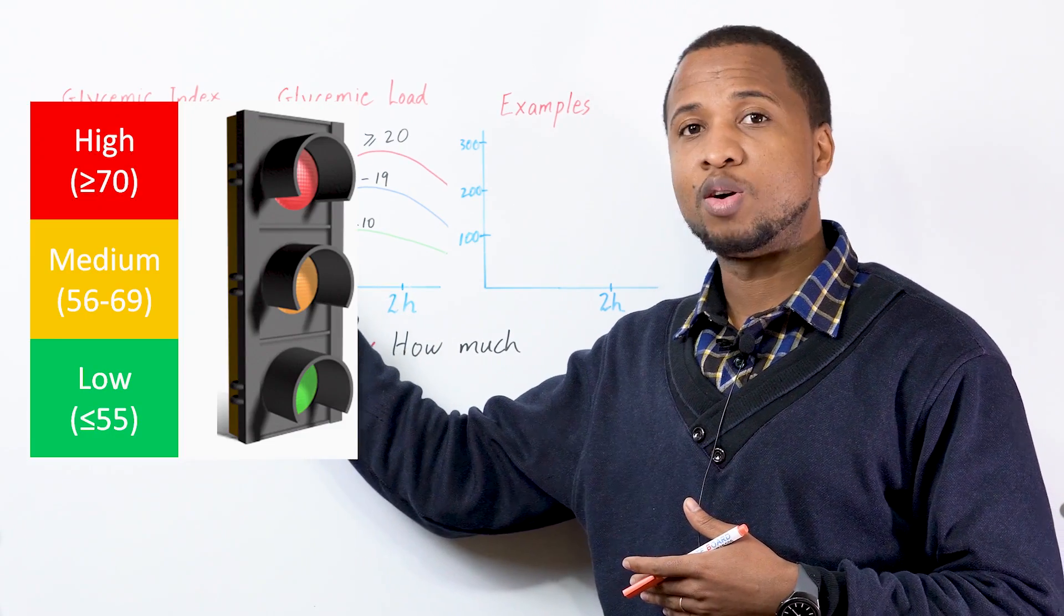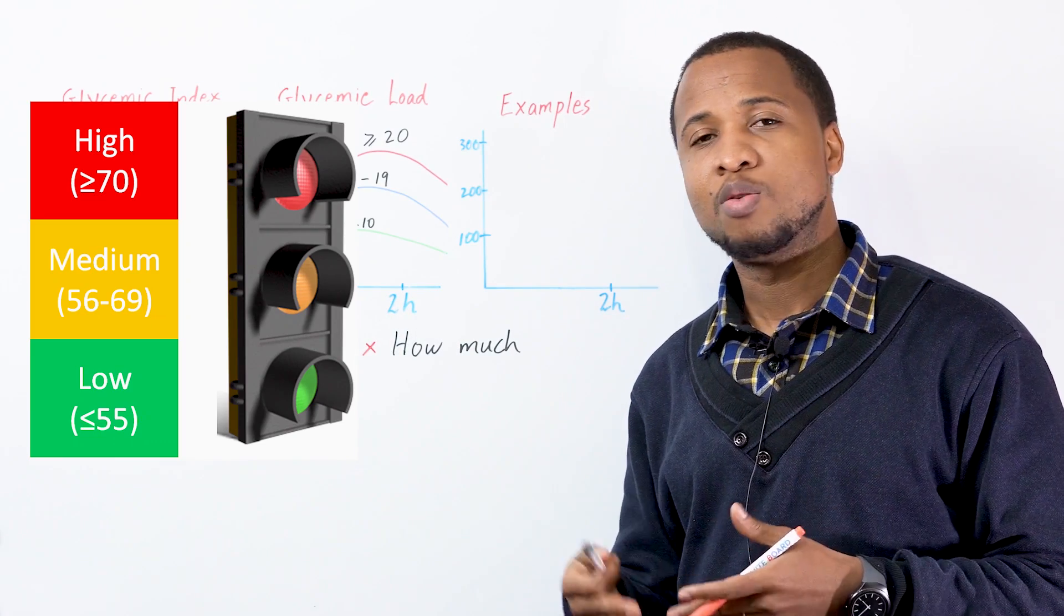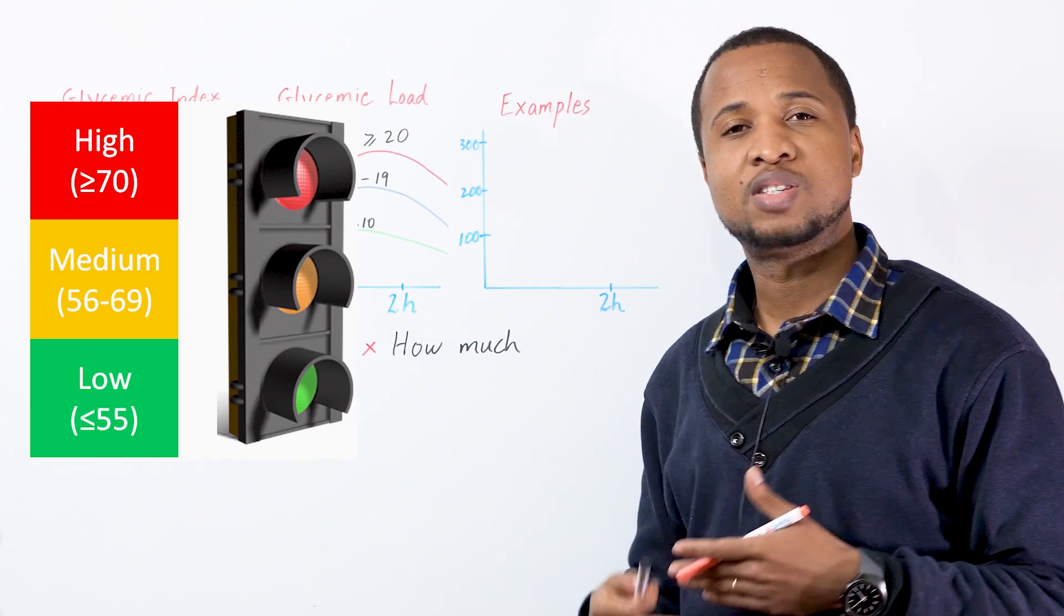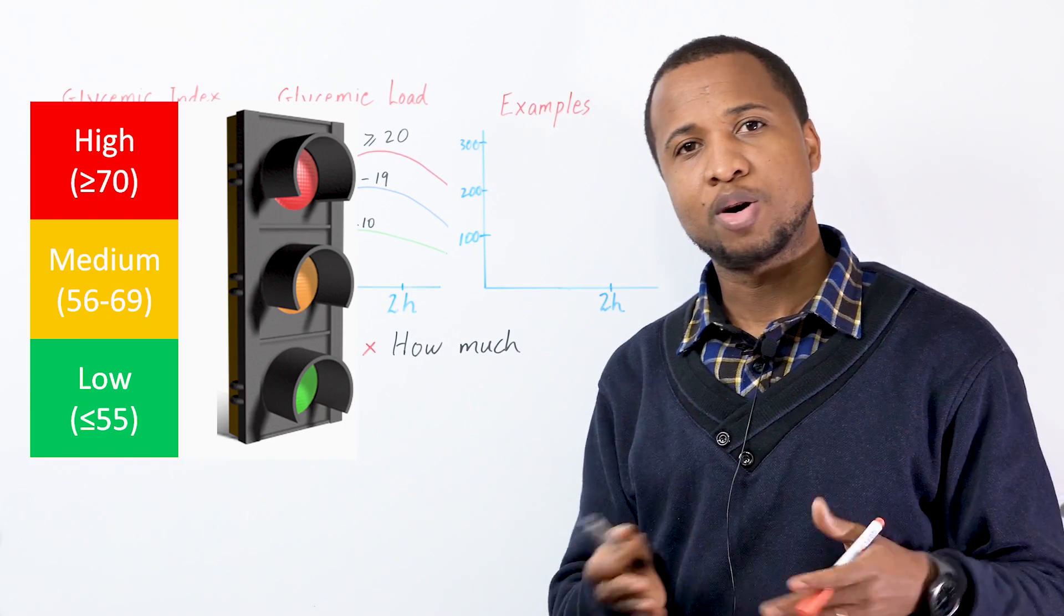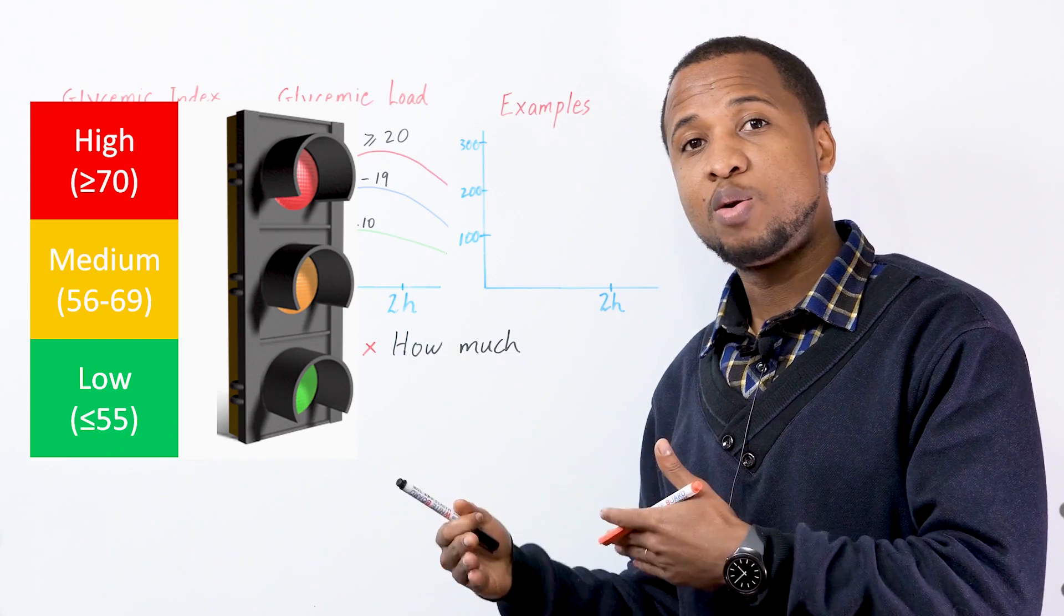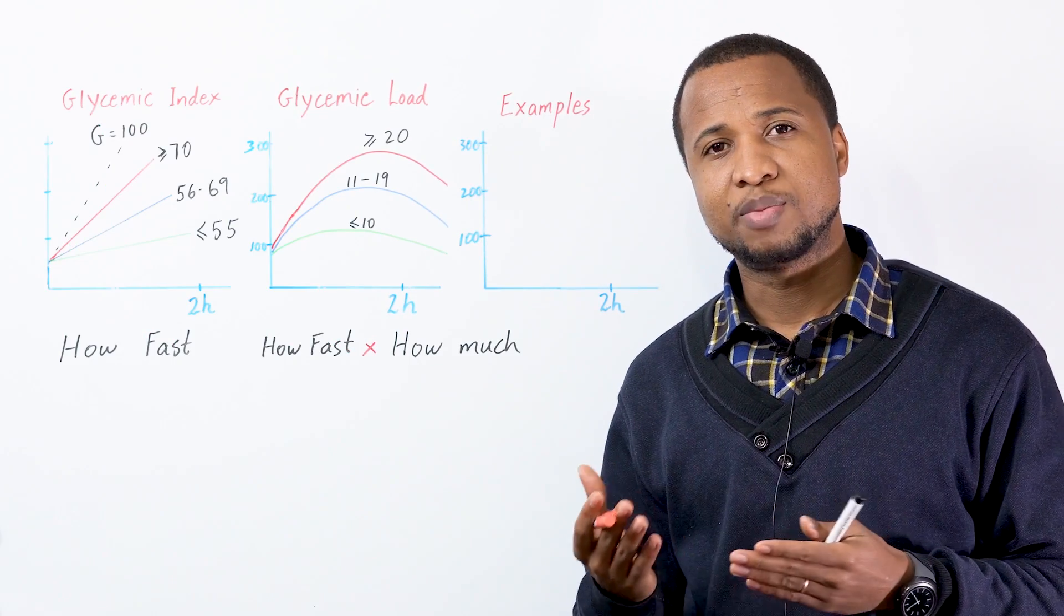Anything that you eat that changed to blood sugar has a number. If that number is 70 or more, it raises your blood sugar pretty fast, almost like glucose. Now anything from 56 to 69, we call it moderate, and 55 or less has a very low impact on your blood sugar after eating.